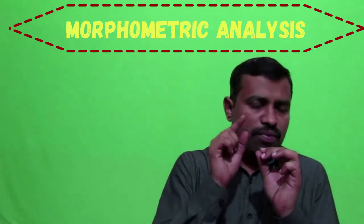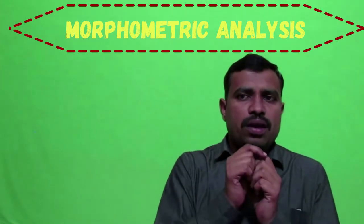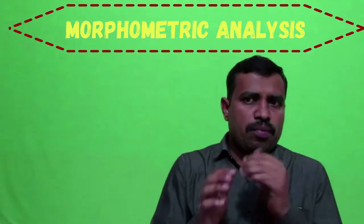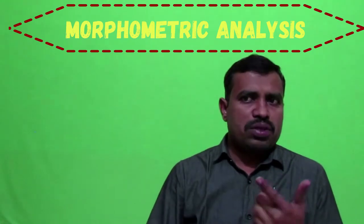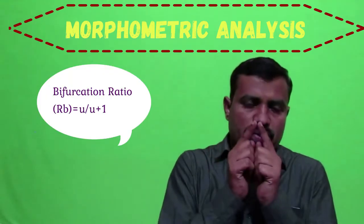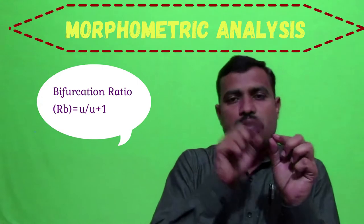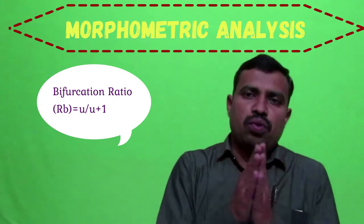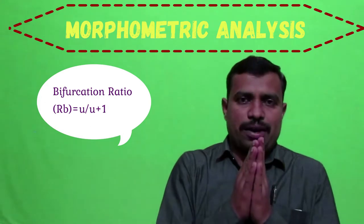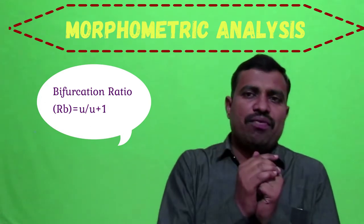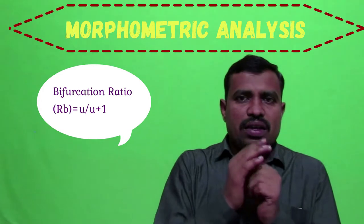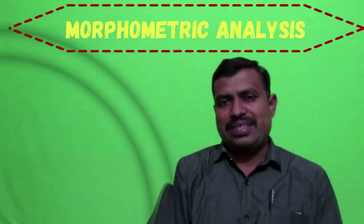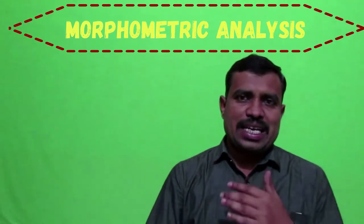Bifurcation ratio is the ratio of the number of streams of a given order to the number of streams of the next higher order. Chow (1964) stated that bifurcation ratio values lie between 3 and 5 for watersheds where geological structure does not influence the drainage pattern. If it is greater than 5, it indicates structural control on the basin.